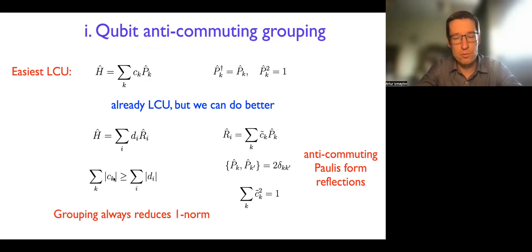And if you do the algebra, actually, you can see that one-norm of grouped operators will always be smaller than the one-norm of non-grouped initial representation of the Hamiltonian in qubit space.